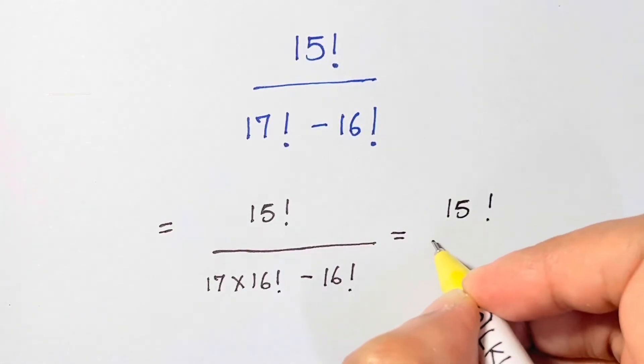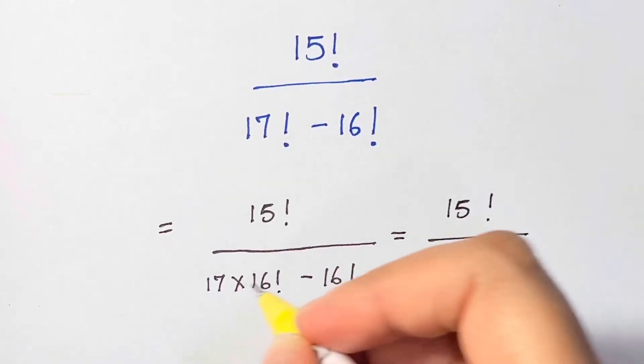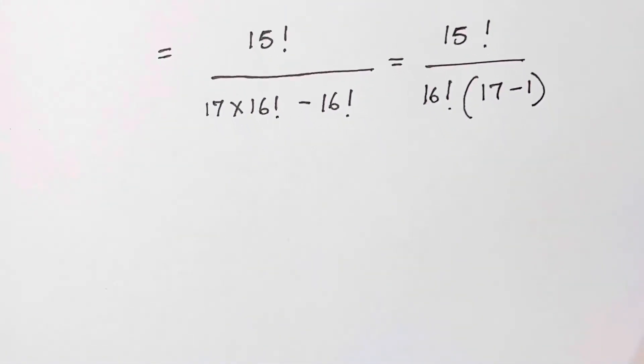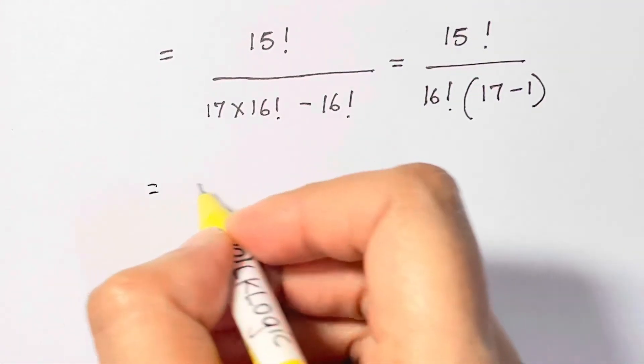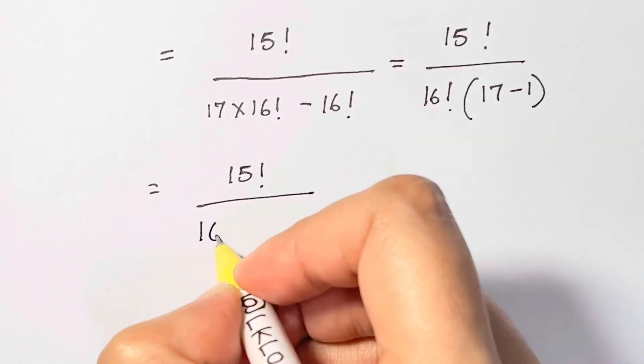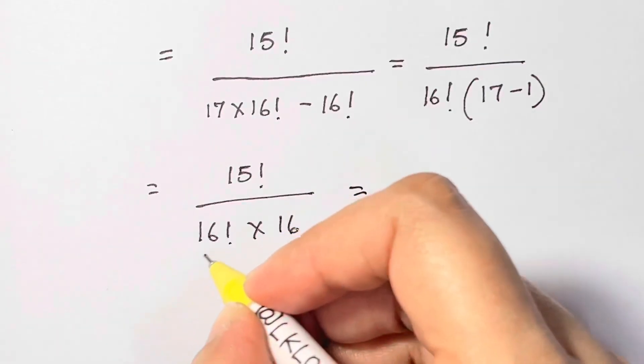So what I'm going to do is take out 16 factorial as a common factor, and what I'm left with is 17 minus 1. Then what do I have? 15 factorial over 16 factorial times 16. Now what I can do is split 16 factorial.